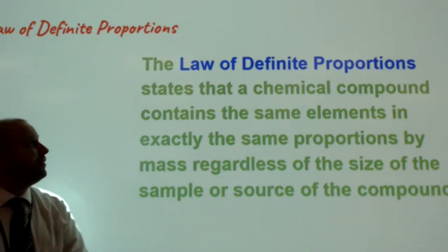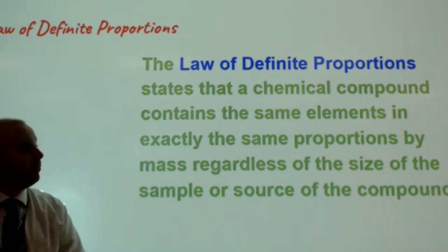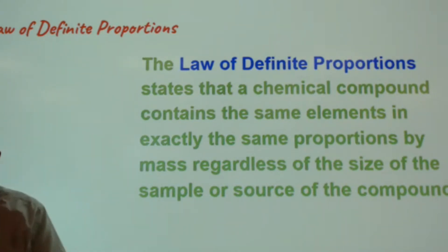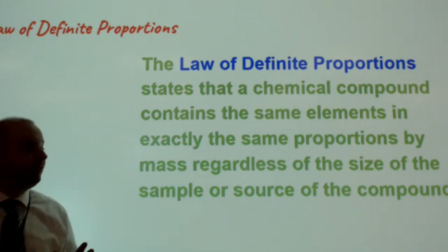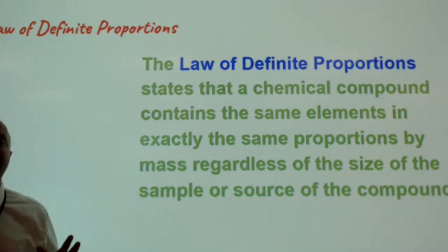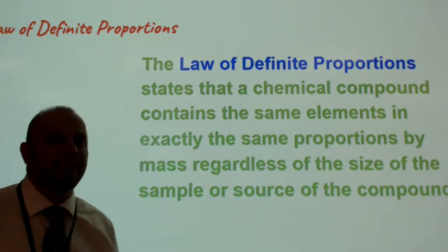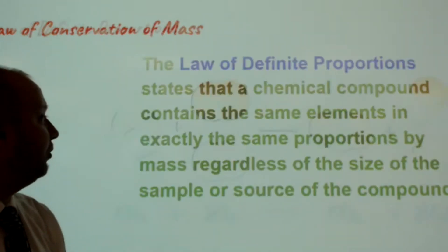Our second law, the law of definite proportions, states that a chemical compound contains the exact same proportions by mass of each element, regardless of the size of the sample or where you are getting that compound from. This one's a little bit easier to wrap our minds around.